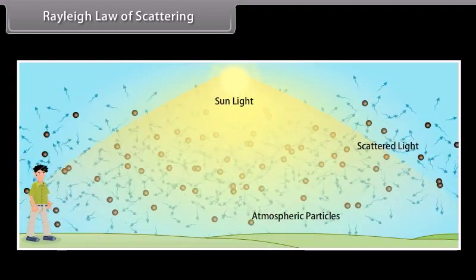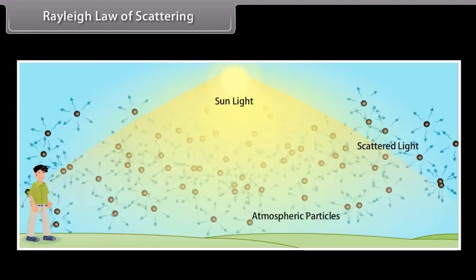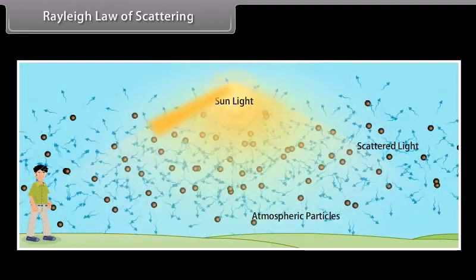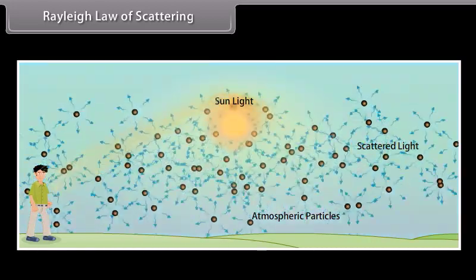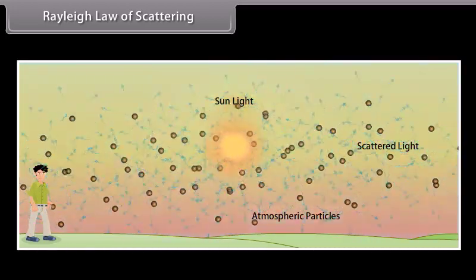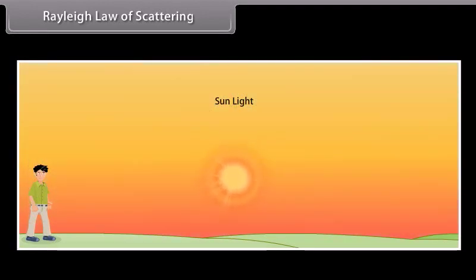Why the sun appears reddish at sunrise or sunset: as the sun gets lower in the sky, its light passes through more of the atmosphere. Even more of the blue light is scattered, allowing the reds to pass straight through to your eyes.